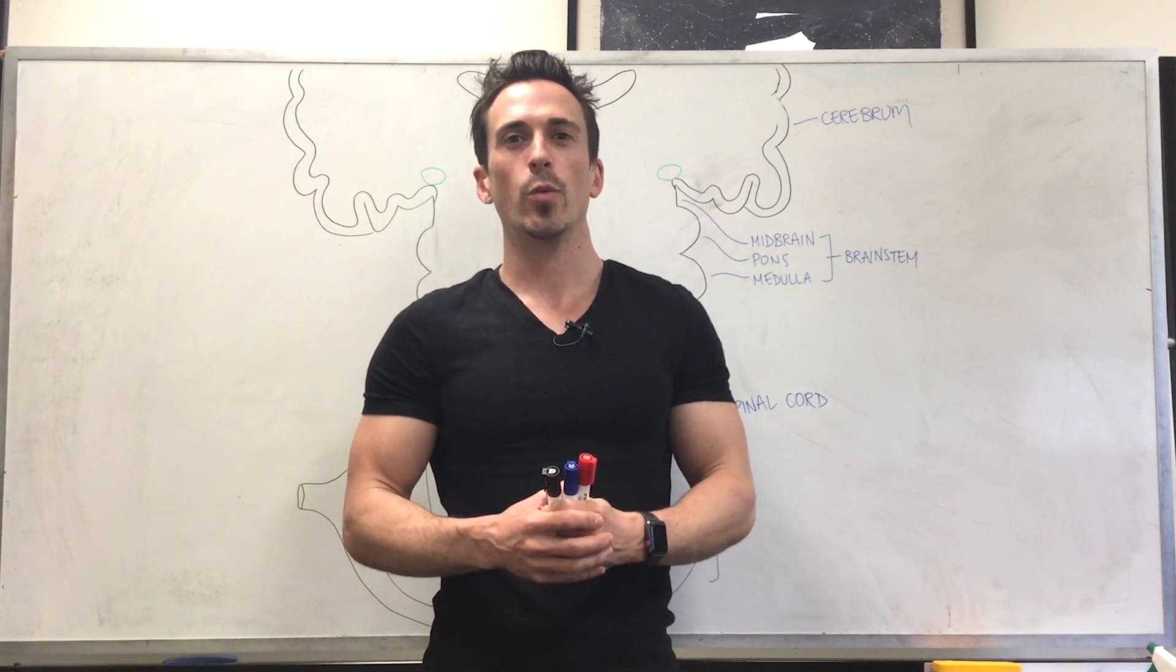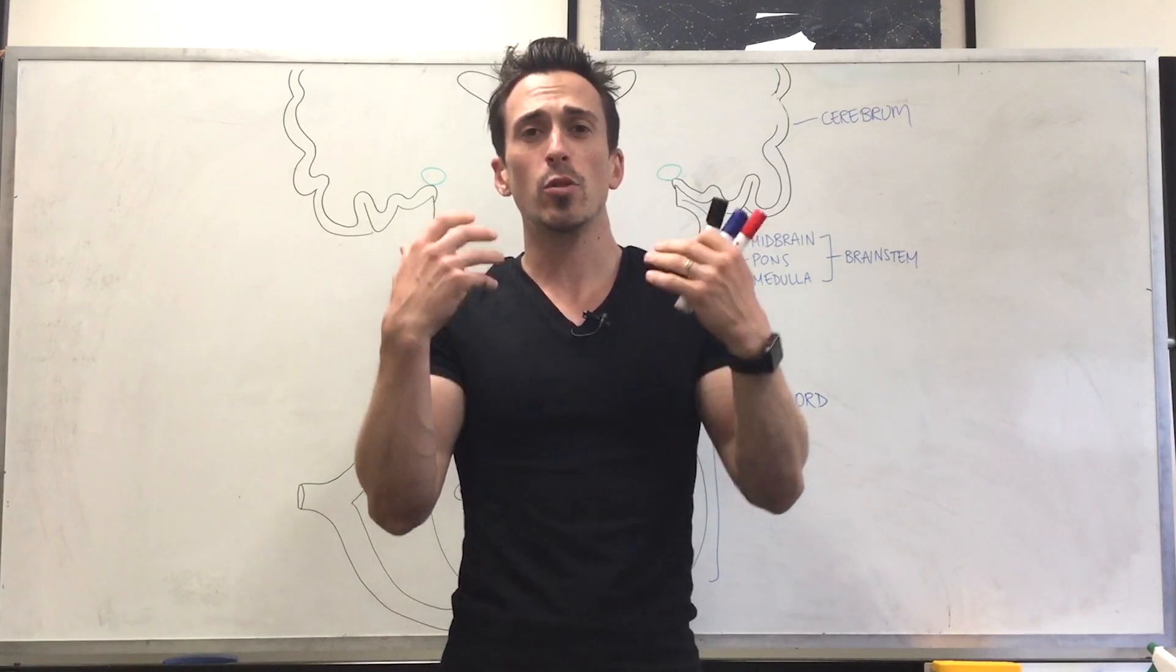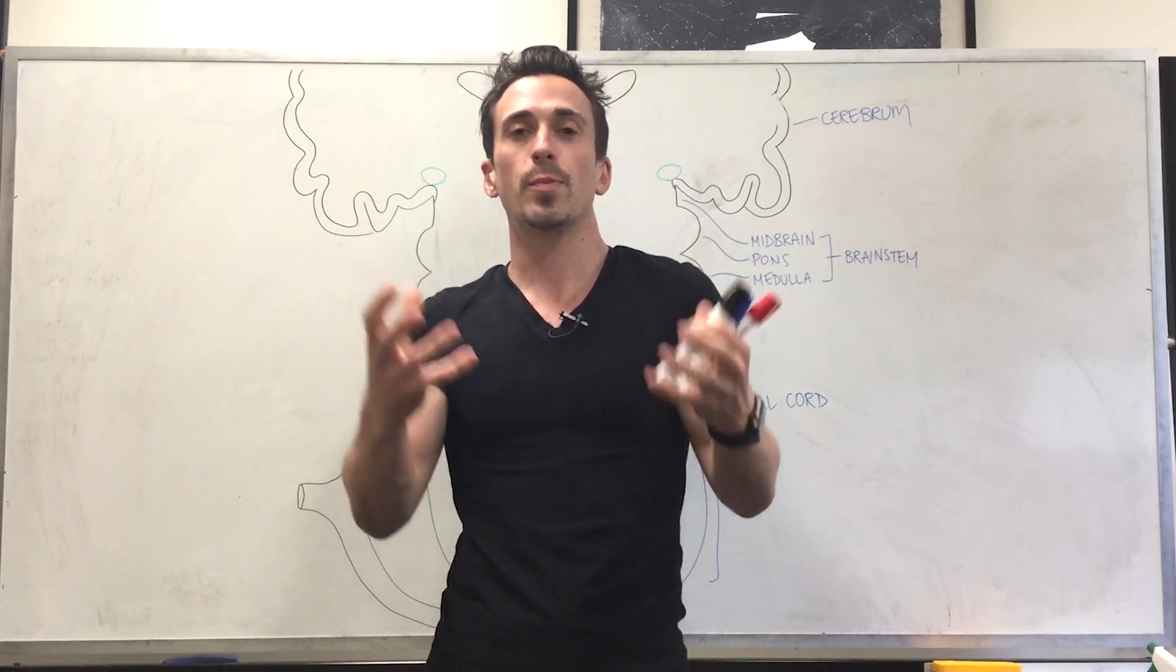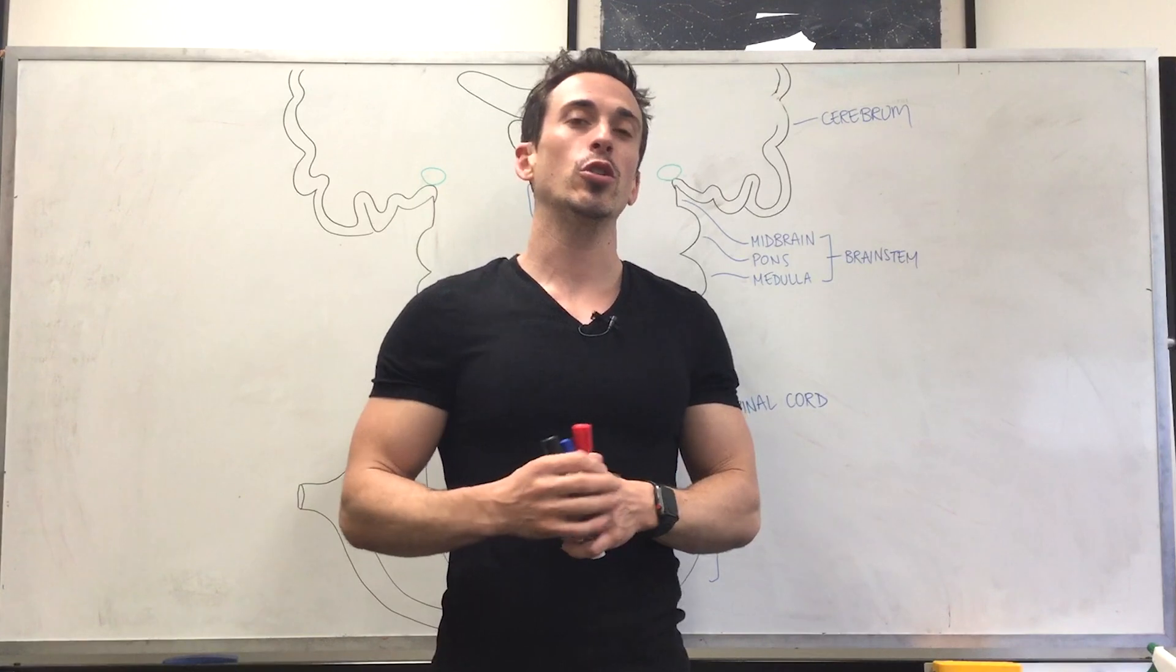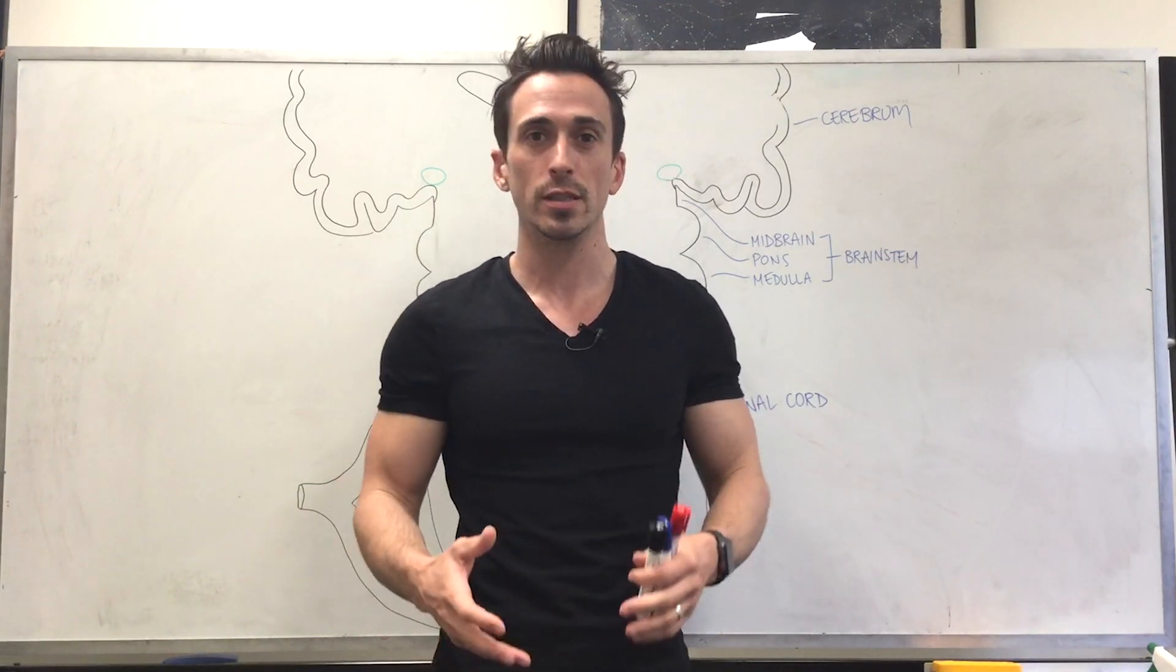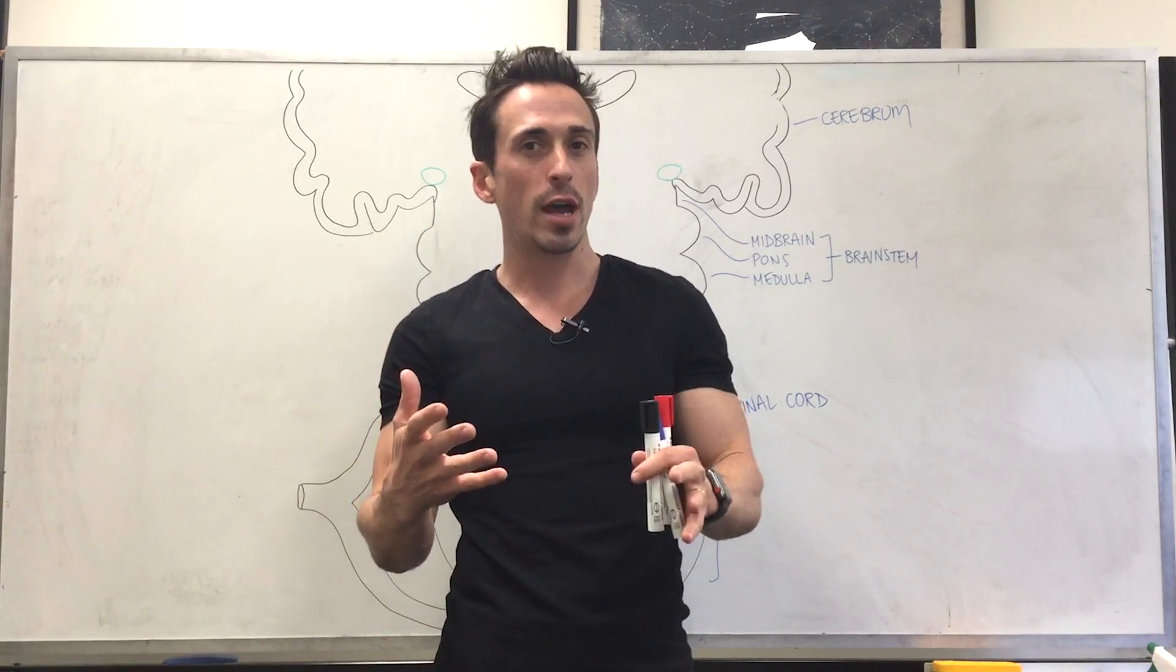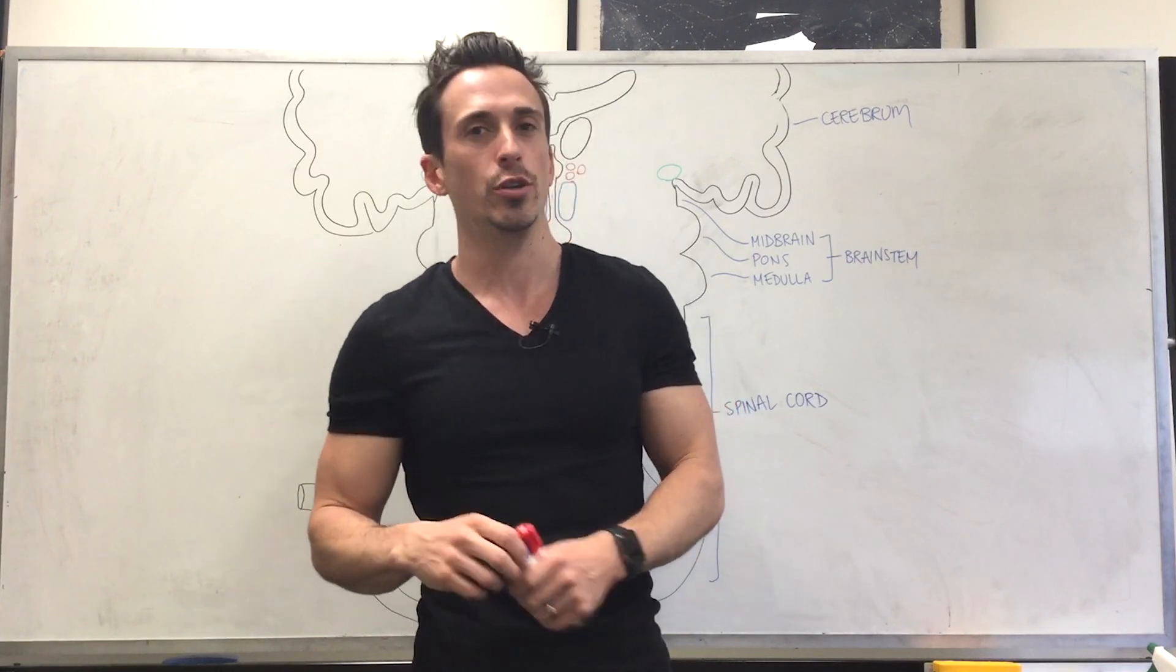Hi everybody, Dr. Mike here. In this video we're going to talk about the body's own analgesic system. This is the body's own pain relief system in which we experience pain, our body releases certain types of chemicals called endorphins, enkephalins and dynorphins to help reduce or mitigate that pain. I'm going to try and succinctly tell you exactly how this process occurs.